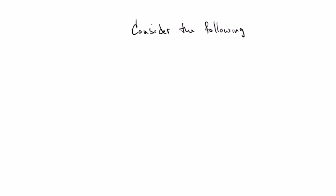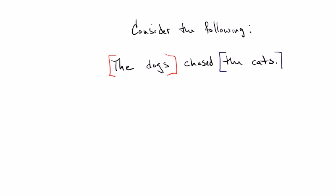Consider the simple sentence: 'The dogs chased the cats.' We know that this sentence has five words in it. But what we want to do here is make the argument that 'the dogs' is at some level a single unit, and that 'the cats' is also at some level a single unit within the sentence.